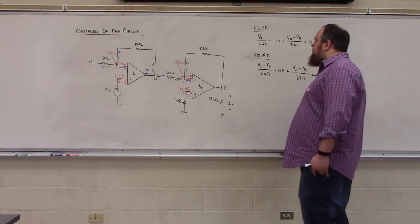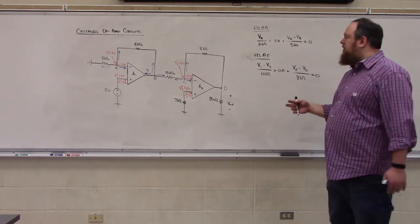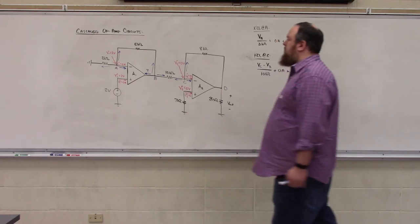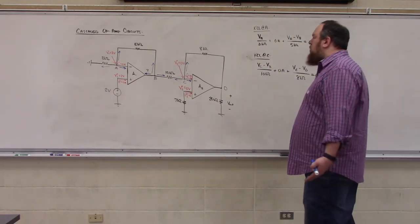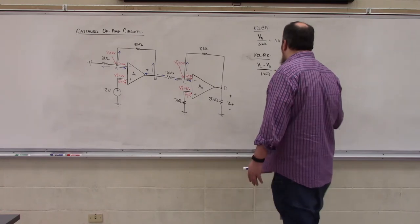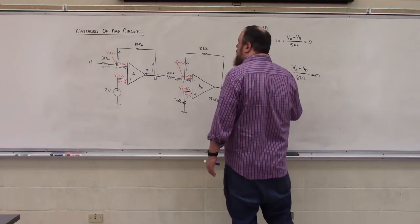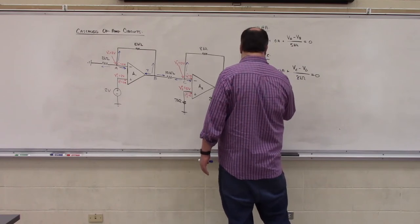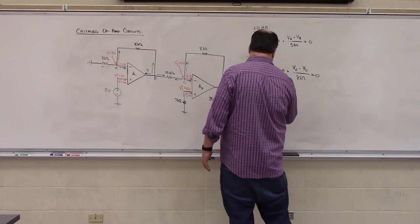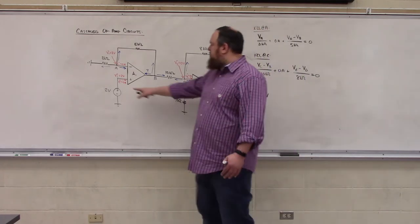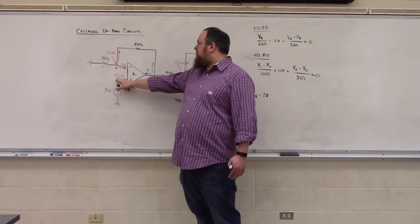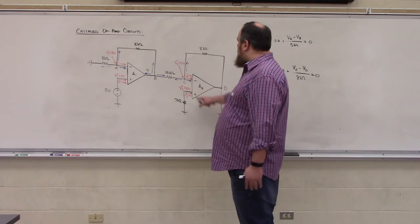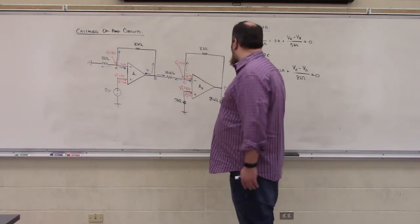So our other relationships that we are going to have to use are the voltage relationships that come from applying the ideal op amp model. The node voltage at node A must be 2 volts because if there are 2 volts applied at the non-inverting input terminal, that same 2 volts appears at the inverting input terminal. Similarly, node VC has a voltage of 0 volts.